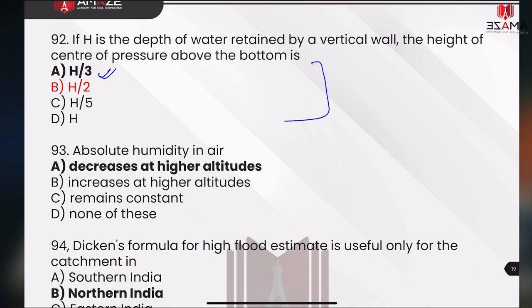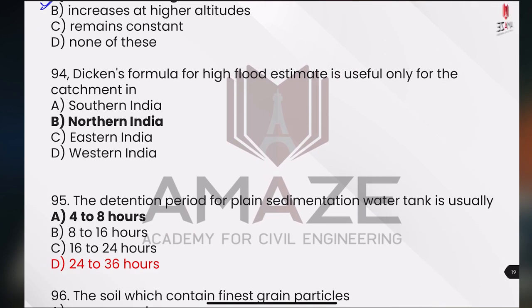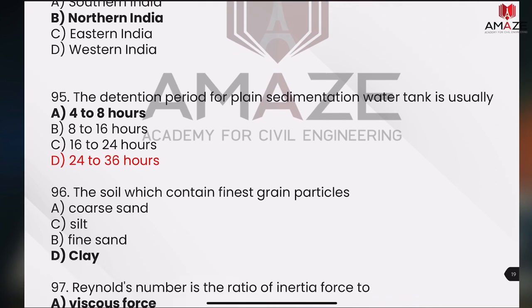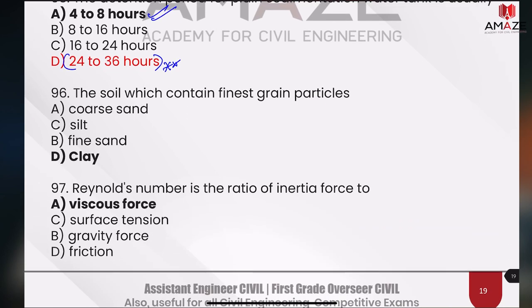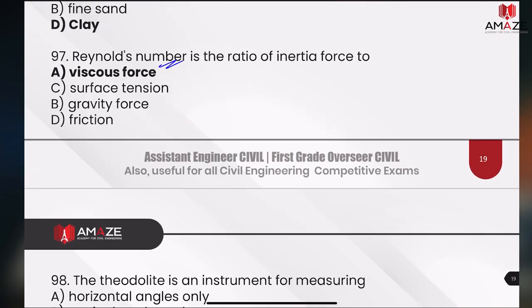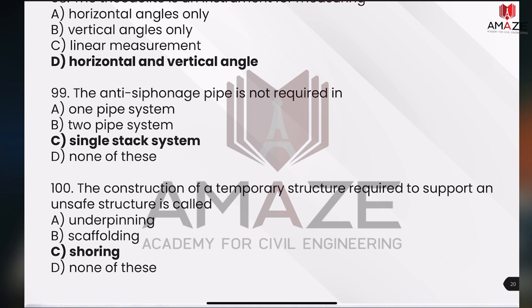Now, what is the challenge? Absolute humidity in air decreases at higher altitudes — this is the answer. The Dickens formula is used in North India and Central India. Detention period for a plane — that is 4 to 8 hours, but the PSE answer is 24 to 36 hours. 4 to 8 hours — what is the answer? What is the clay? What is the viscous force? What is the Reynolds number? What is the anti-siphonage pipe? It is not required. We have to do single stacks — anti-siphonage is not necessary.